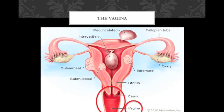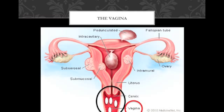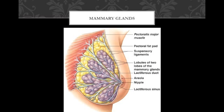The vagina serves as a passageway for eliminated menstrual fluids, receives the penis during sexual intercourse, holds spermatozoa before their entry into the uterus, and forms the lower portion of the birth canal. If fertilization, a pregnancy, and a baby result, the newborn gains nourishment through the milk secreted by the mammary glands of the breast. Milk production, or lactation, occurs in the glands and is exited through the nipple.